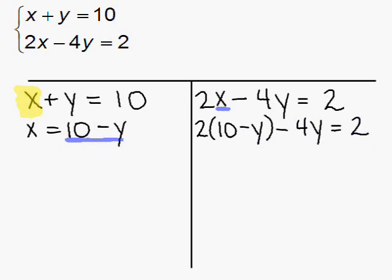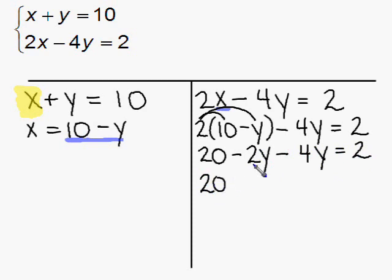Another way of phrasing that sentence is that x can be replaced by 10 minus y. So, we're going to do that. We're going to go to the other equation and replace this x with the expression 10 minus y. That gives us 2 times the quantity 10 minus y minus 4y is equal to 2.